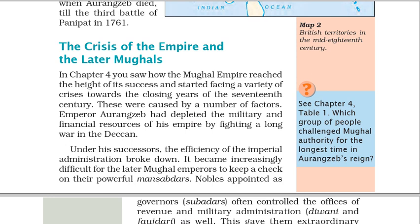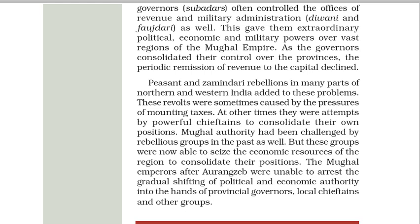Which group of people challenged Mughal authority for the longest time in Aurangzeb's reign? Under his successors, the efficiency of the imperial administration broke down. It became increasingly difficult for the later Mughal emperors to keep a check on their powerful Mansabdars. Nobles appointed as governors — Subadars — often controlled the offices of revenue and military administration, Diwani and Faujdari, as well. This gave them extraordinary political, economic and military powers over vast regions. As the governors consolidated their control over the provinces, the periodic remission of revenue to the capital declined.